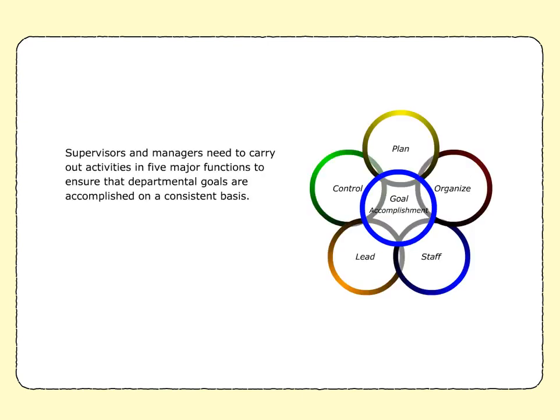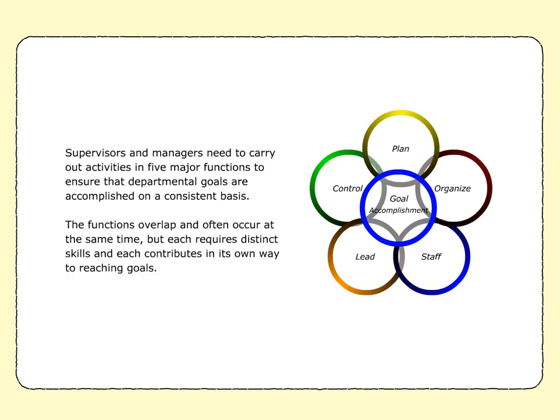Supervisors and managers need to carry out activities in five major functions to ensure that departmental goals are accomplished on a consistent basis. The functions overlap and often occur at the same time, but each requires distinct skills and each contributes in its own way to reaching goals.